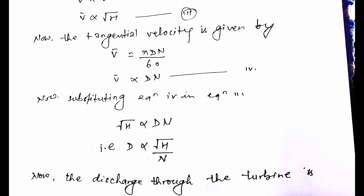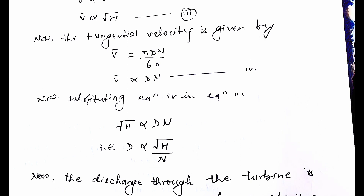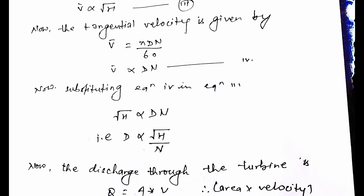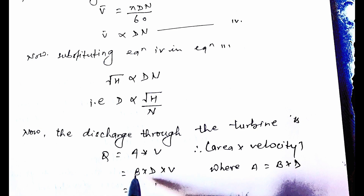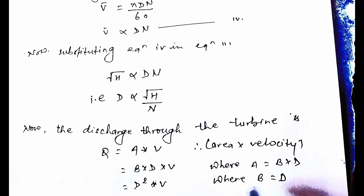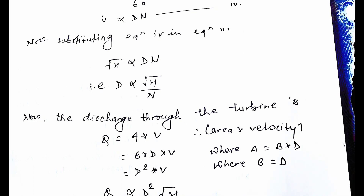The discharge through the turbine is Q equals area times velocity. The area can be factorized as B times D, and considering B equals D, the area becomes D squared. So Q is proportional to D squared times the velocity, where velocity is proportional to root H.